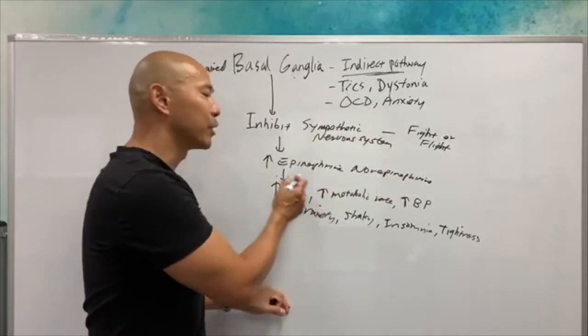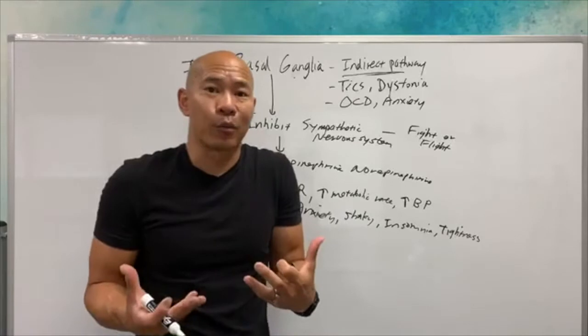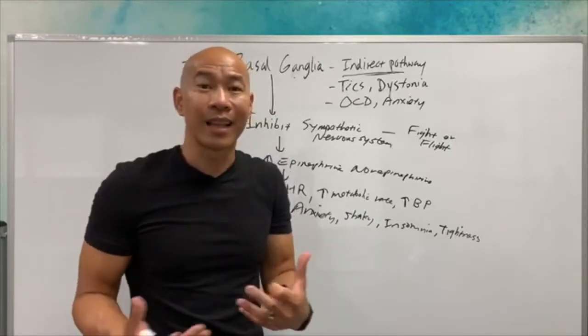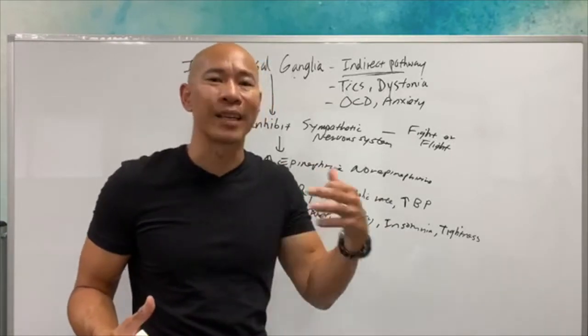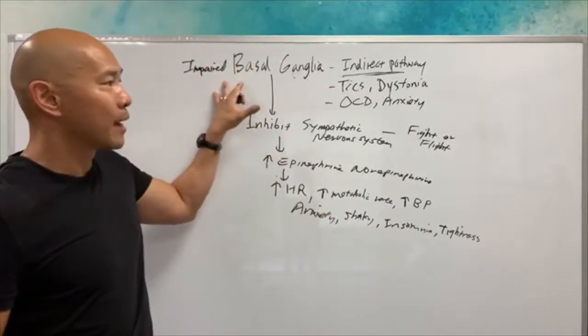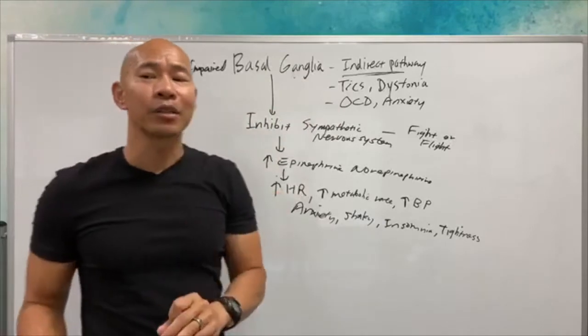You start getting this increased metabolic rate, like you're in the fight or flight when you have no reason to. It's not like you're stressed, but you just feel like you can never shut it off. You're always anxious, you're restless. And it's because this part of your brain may not be functioning properly.